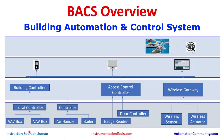Environmental sensors can provide temperature and humidity data to the building controller. If the sensor values are outside the set points, the controller can signal a VAV — Variable Air Volume — box to increase or decrease the airflow and bring the temperature to the desired state.